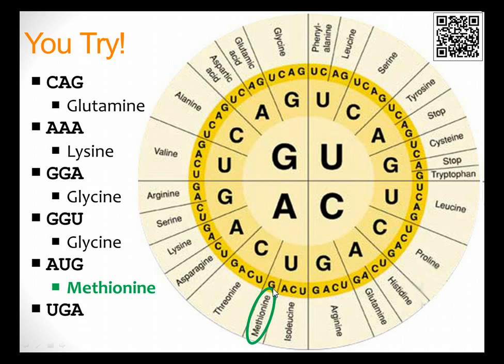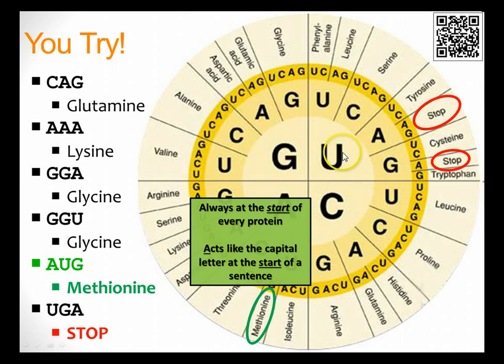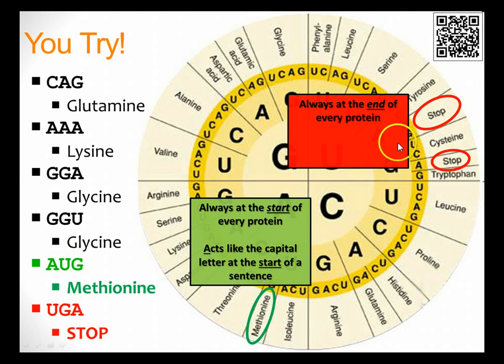AUG, A to U to G, gives you methionine. This one is different. Methionine right here is always found at the start of every protein. It's like the capital letter at the start of a sentence. When I'm looking at the capital A, that tells me, oh hey, a new protein is starting, a new sentence. AUG and methionine is always the start of every sequence. UGA, U to G to A, you'll notice that this one codes for a stop. And there's also another one here, UAA or UAG. Now, stop is kind of the opposite. It's always found at the end of every protein. It kind of acts like the period at the end of a sentence. That's how you know your sentence is done, you found a period.